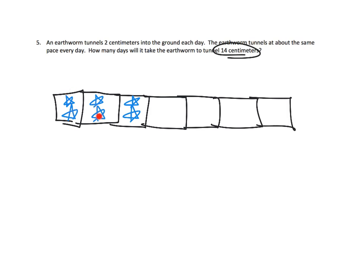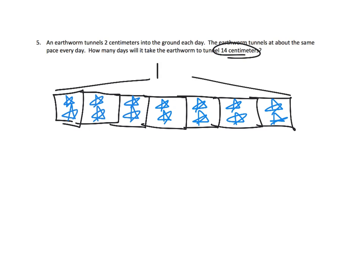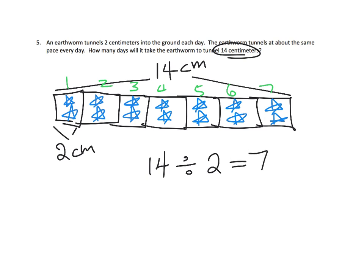Let's see: we've got 1, 2, 3, 4, 5, 6, and then 7, 8, 9, 10, 11, 12, 13, 14. There's our 14 centimeters total. Each day is 2 centimeters, and it took us 7 — because I can count: 1, 2, 3, 4, 5, 6, 7. It took us 7 days. What would that look like as a division sentence? 14 divided by 2 is equal to 7.